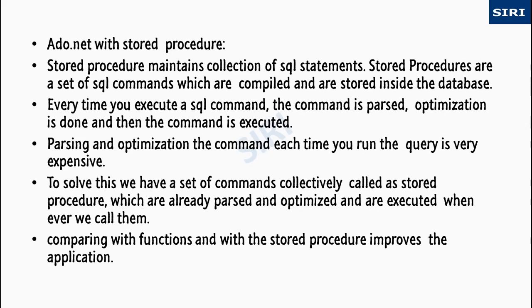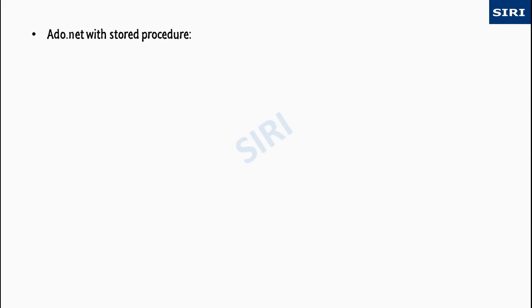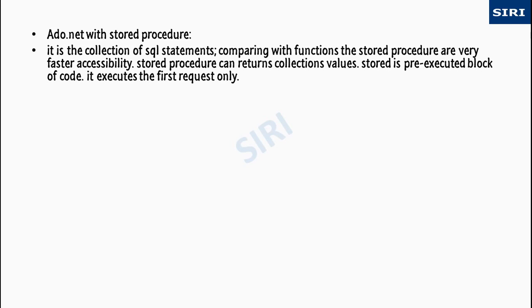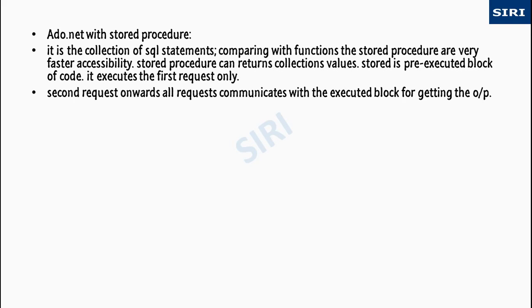Comparing with functions, using stored procedures improves the application. Here we discuss how to use a stored procedure in ADO.NET. A stored procedure is a collection of SQL statements. Comparing with functions, stored procedures have very fast accessibility. They can return collection values and are stored as a pre-executed block of code. It executes the parsed request only once; from the second request onwards, all requests communicate with the executed block to get the output.